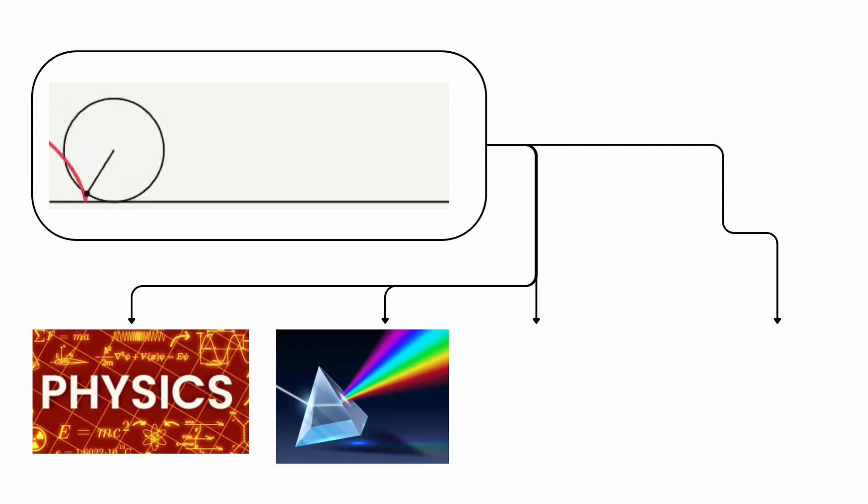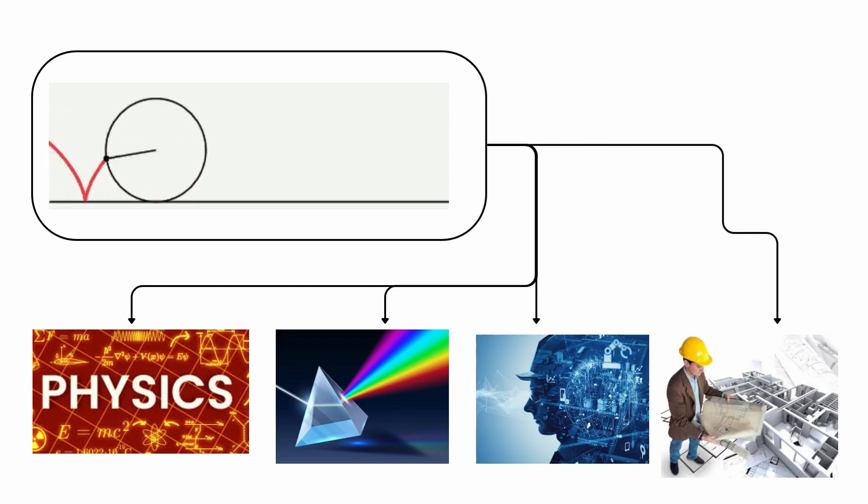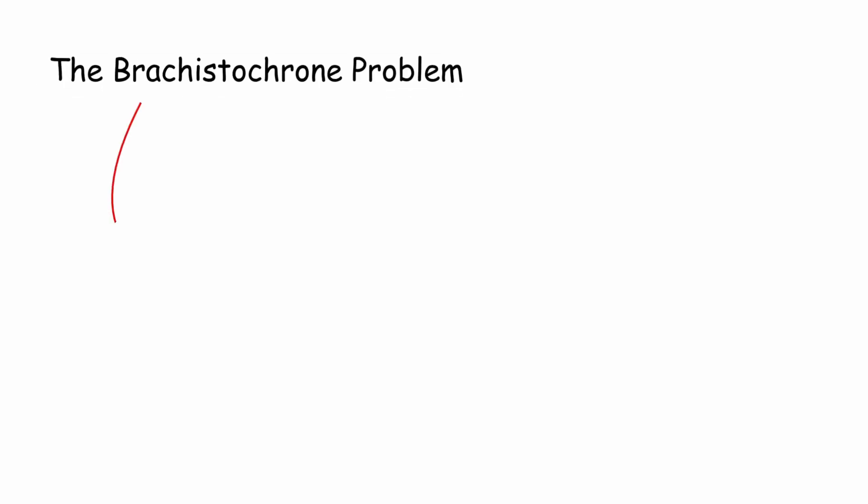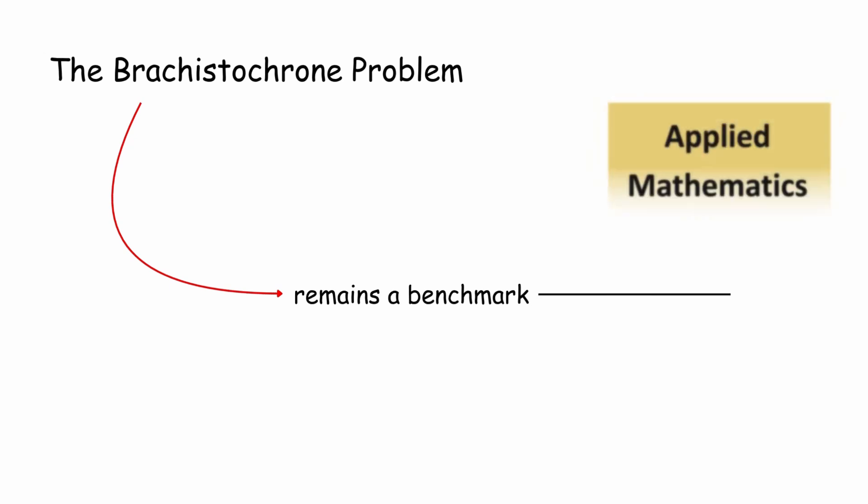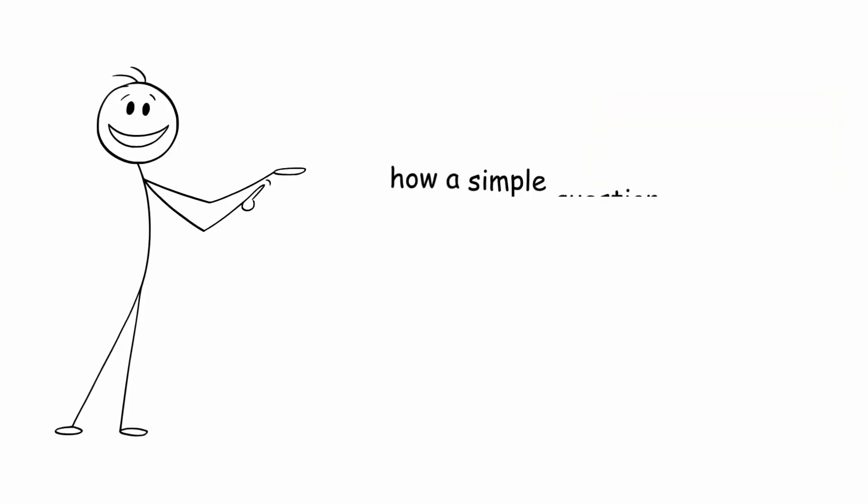The cycloid is a plane curve that has applications in physics, optics, engineering, and architecture. The Brachistochrone problem remains a benchmark in applied mathematics, demonstrating how a simple question led to advances in multiple disciplines.